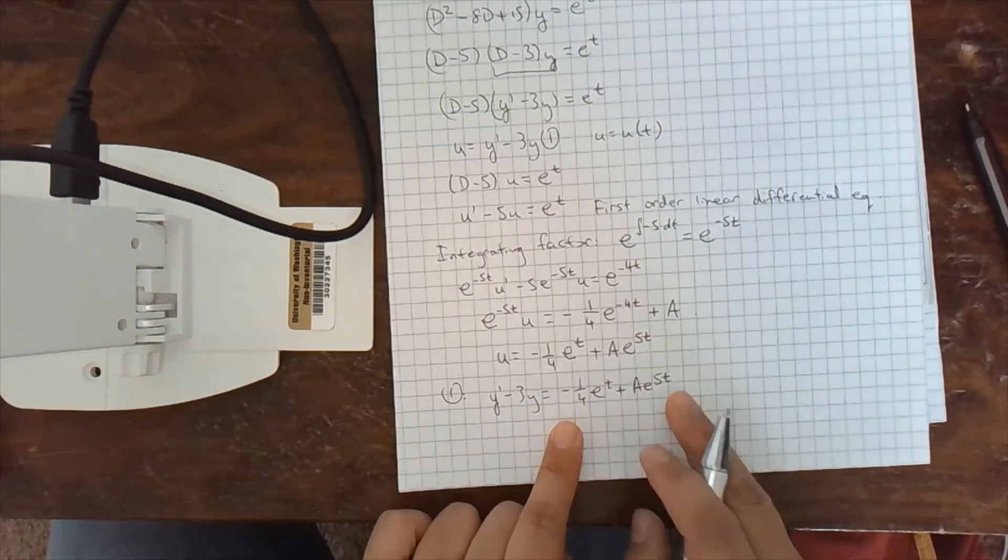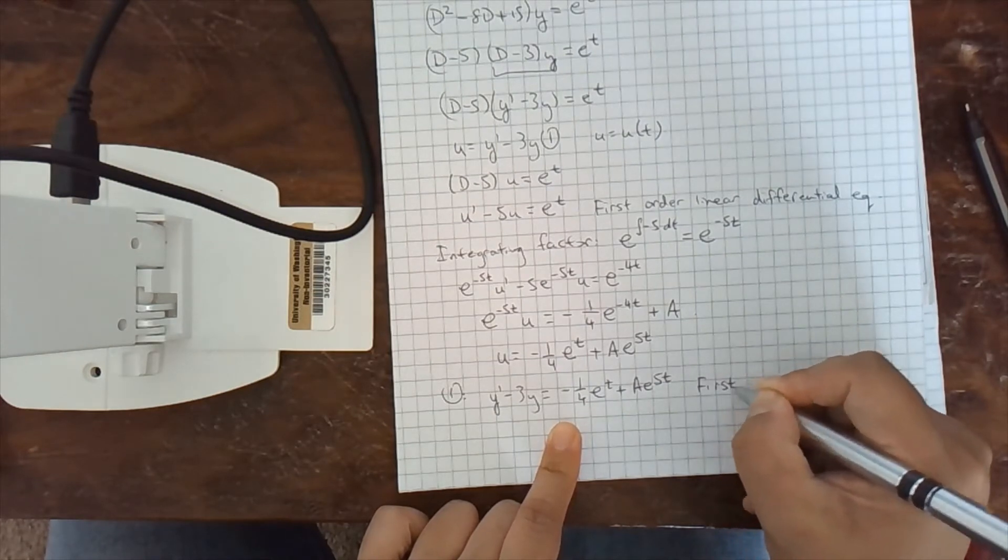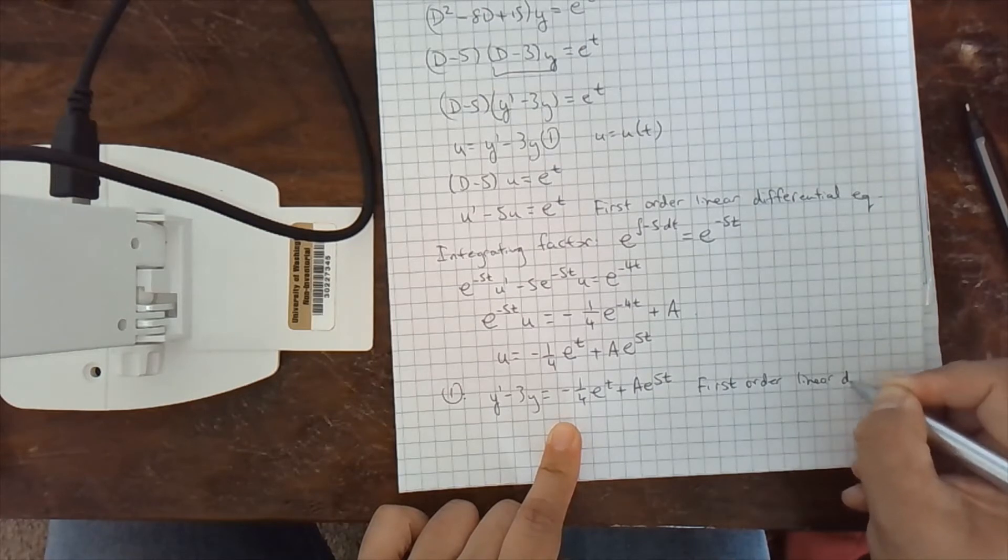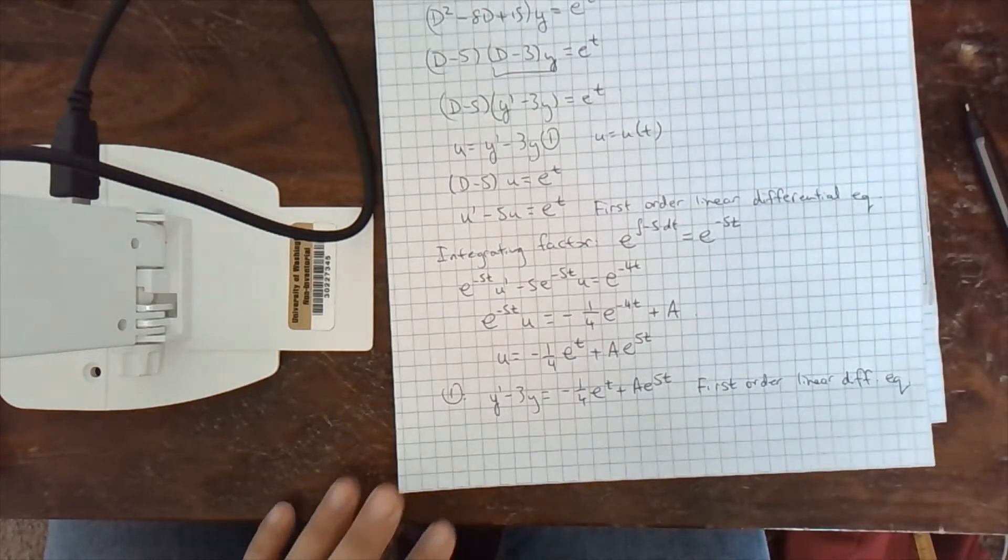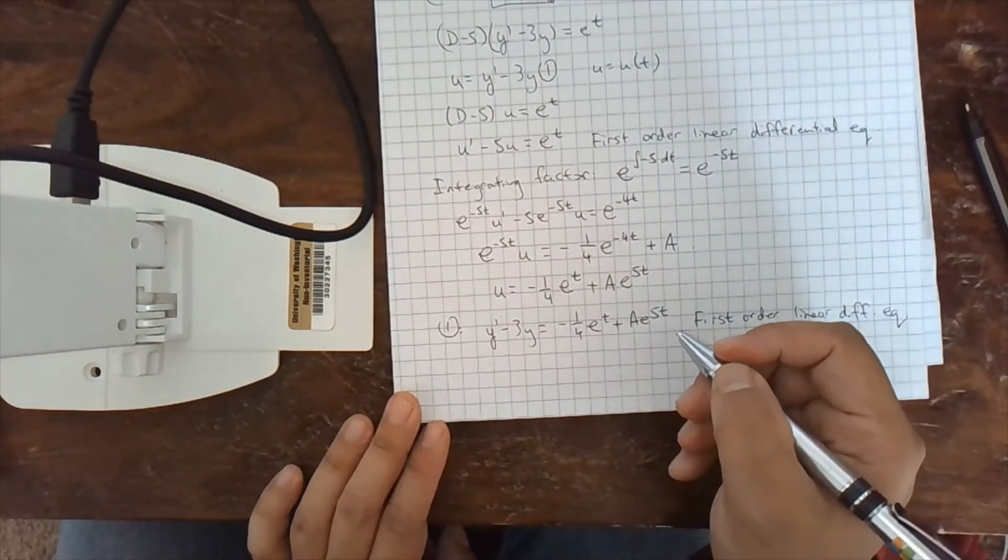And this is looking pretty ugly over here, but it's still just a function of t. So this is still a first order linear differential equation. Different one. I can have any function of t. It just has to be linear in y.